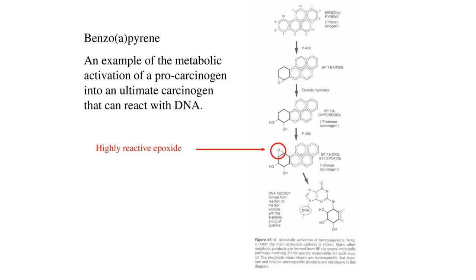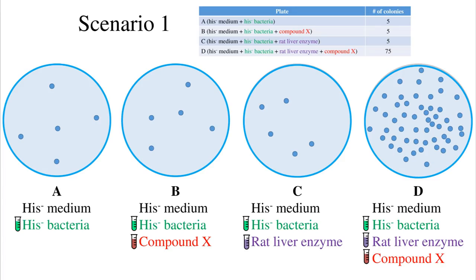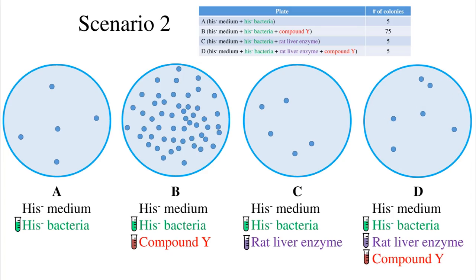An example of a pro-mutagen or pro-carcinogen is benzo[a]pyrene, a compound found in charred foods. The parent molecule is harmless, but once it is metabolized by liver enzymes, it becomes a highly reactive intermediate that can covalently bind DNA and lead to a greater rate of mutation. Our results indicated a non-mutagenic parent form but a mutagenic metabolite. Fortunately, most of the time our liver detoxifies and inactivates harmful compounds.